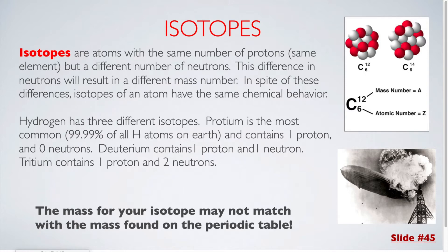Hydrogen has 3 different isotopes. Protium is the most common, which is 99.99% of all hydrogen atoms on Earth, and it contains 1 proton and 0 neutrons. Deuterium contains 1 proton and 1 neutron. Tritium contains 1 proton and 2 neutrons.